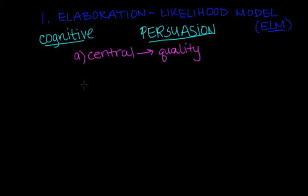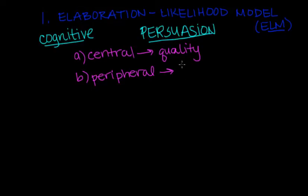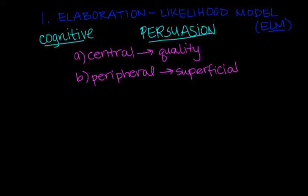The second route is called the peripheral route. The peripheral route says that a degree and shift in attitude depends on superficial persuasion cues presented by the persuader. These cues have no depth to them — they're very shallow. We're subconsciously looking to see if the persuader presents cues such as attractiveness, expertise, or status.